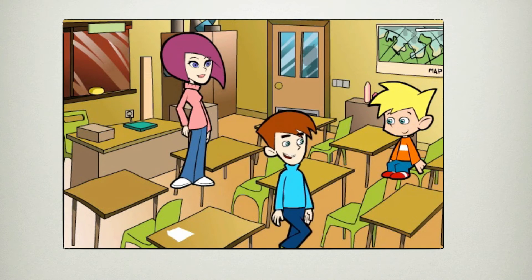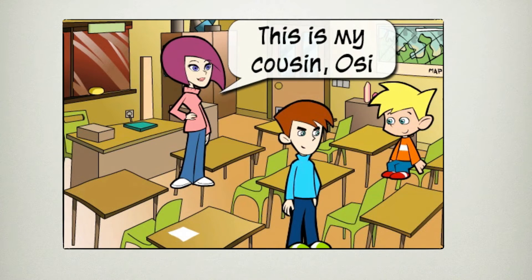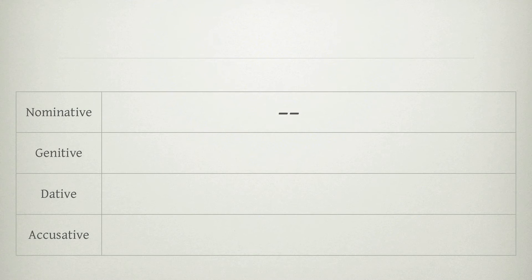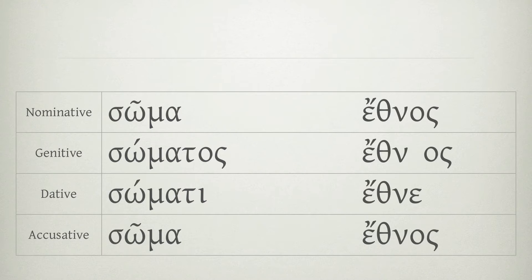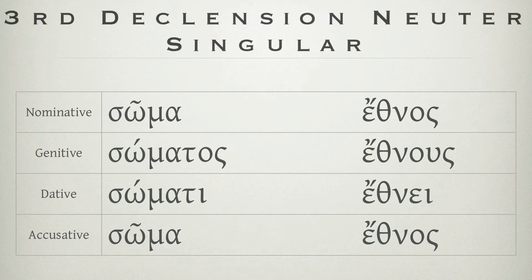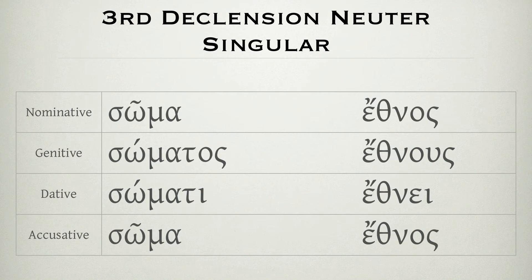Now Saucy-R has a cousin too, and his name is Aussie. Shh, Aussie, shh, shh, Aussie, shh, shh, Aussie, shh. Third declension, neuter, singular.